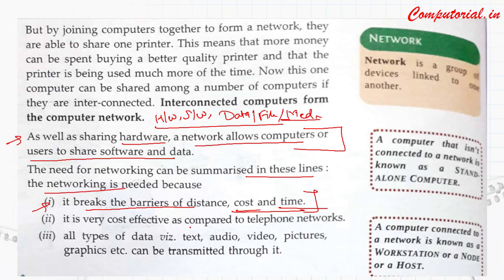Next, it is very cost-effective as compared to a telephone network. Networking is more effective than telephonic conversation because when we have a normal telecommunication network, we have to pay a lot. Whereas if you are using a computing network or the internet, we have various services that we can use - we can do voice calls without any lag or barriers. All types of data, which can be text, audio, video, picture, graphics, etc., can be transmitted through it. By using a network, we can share multiple things.